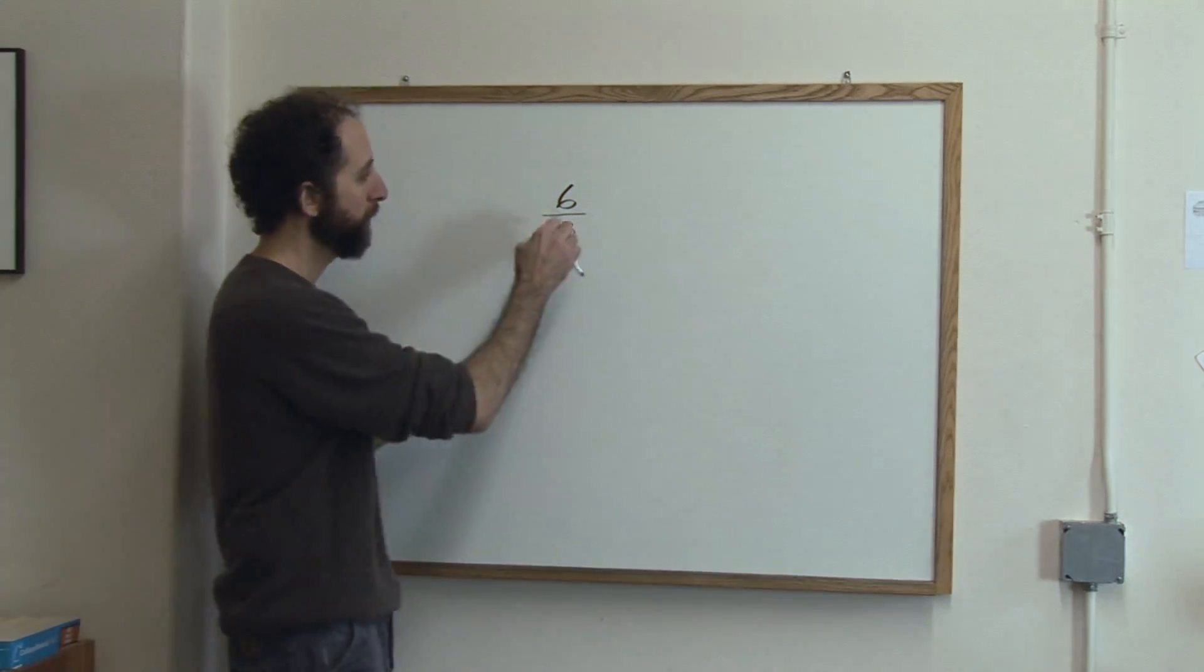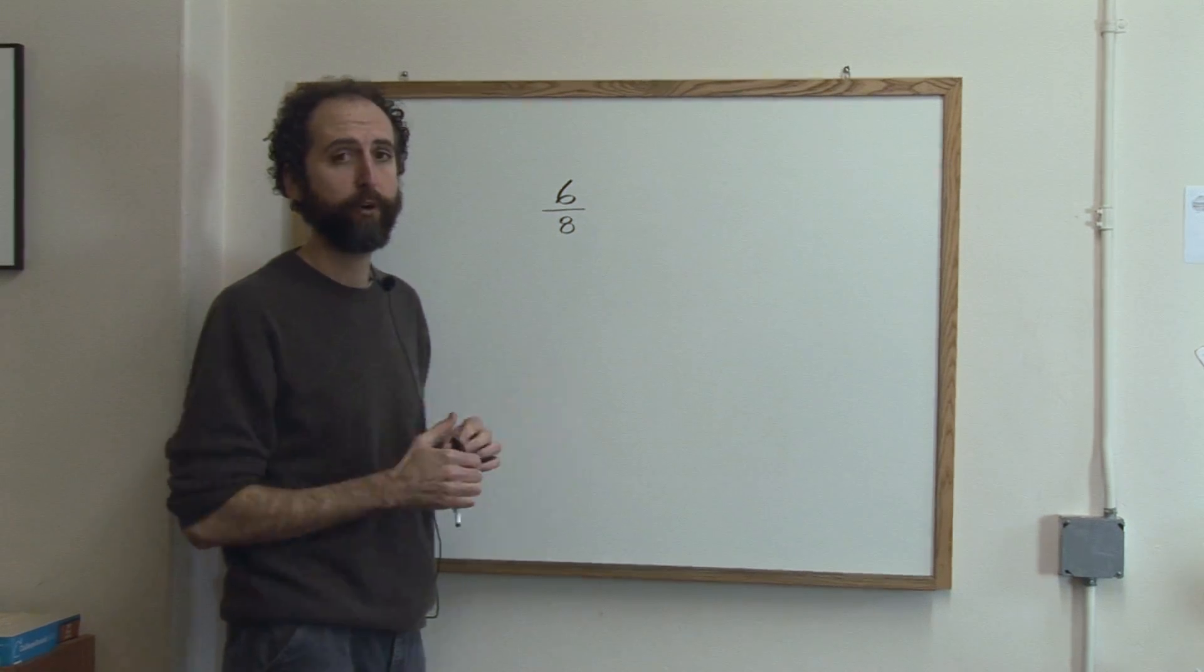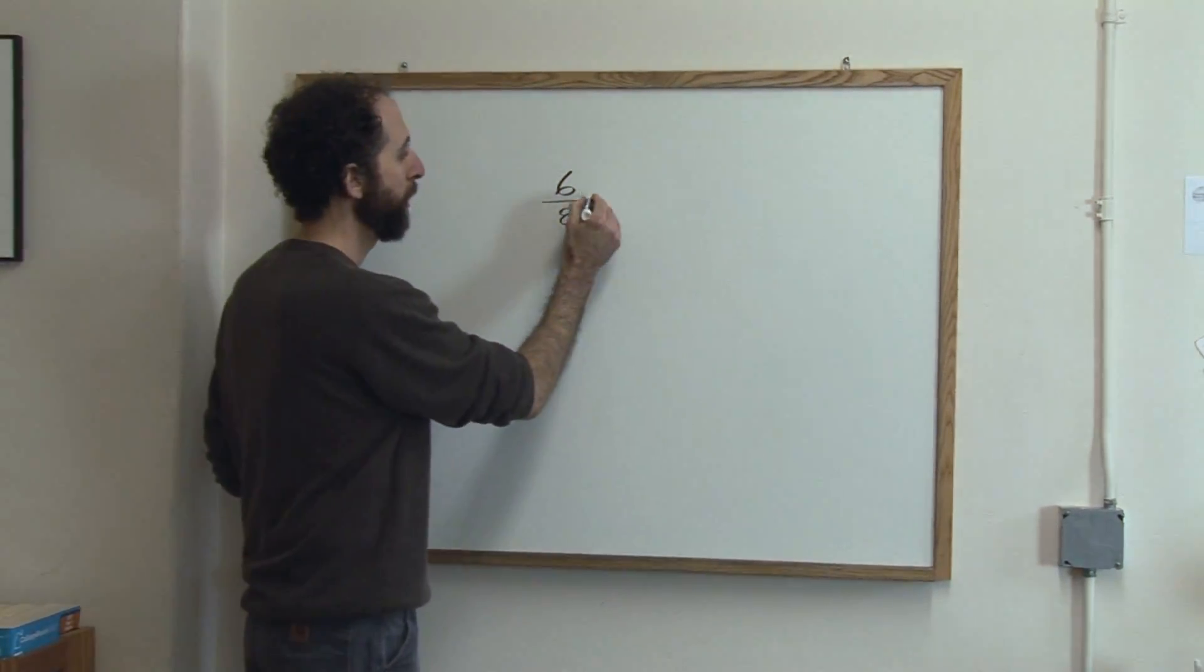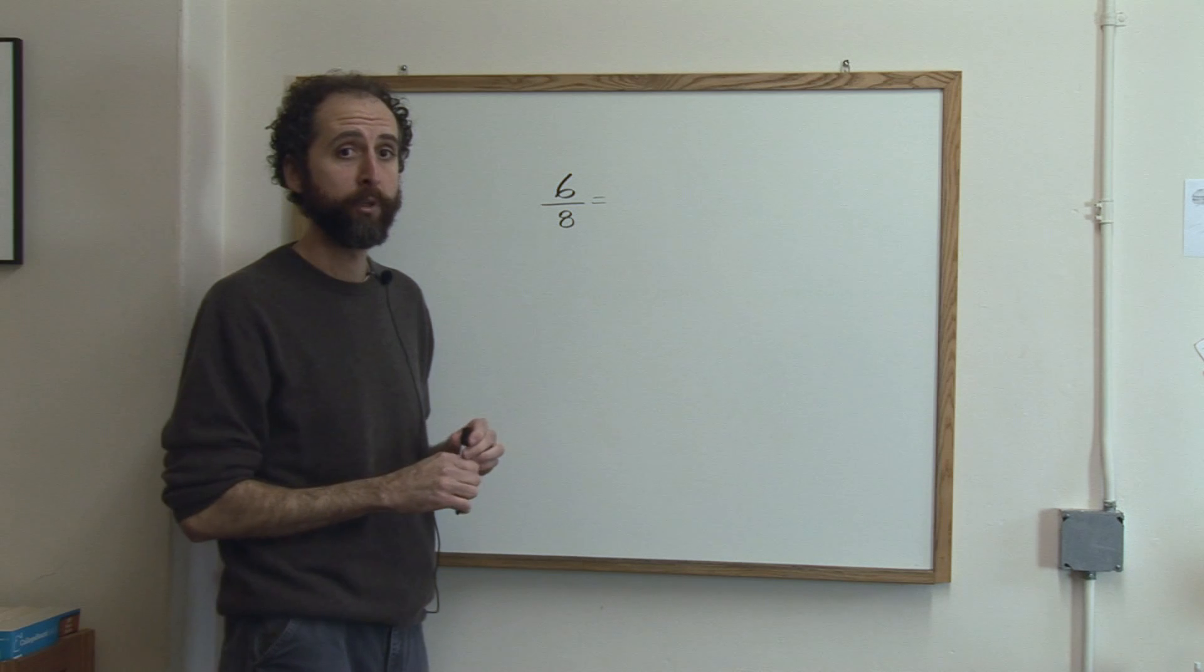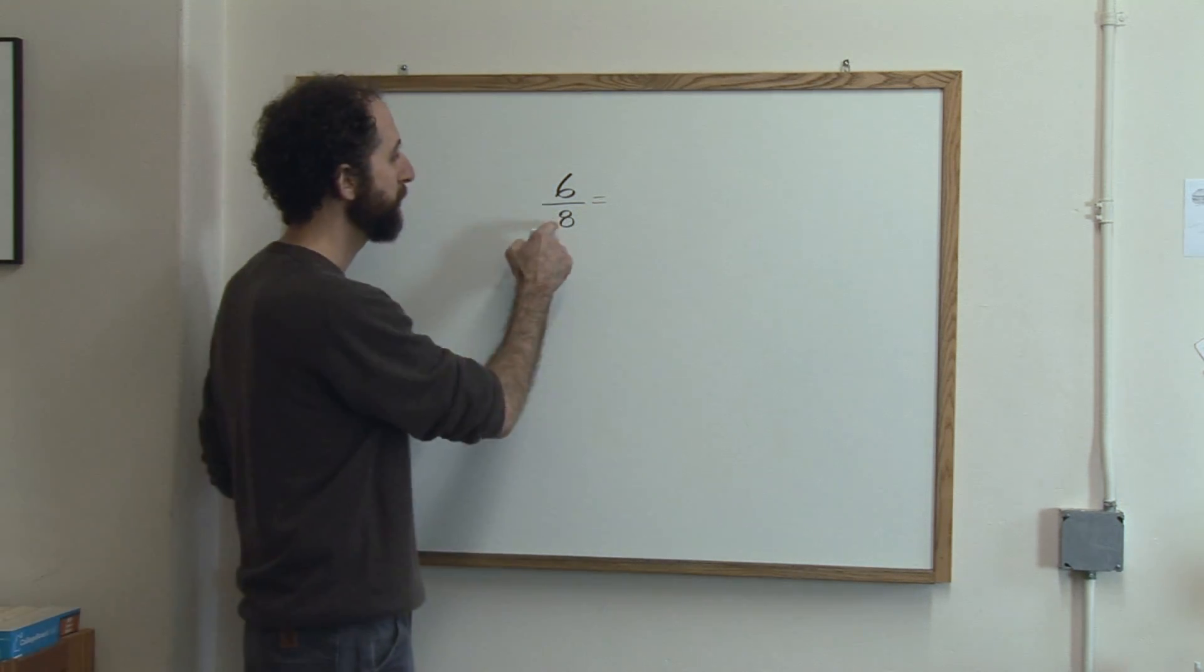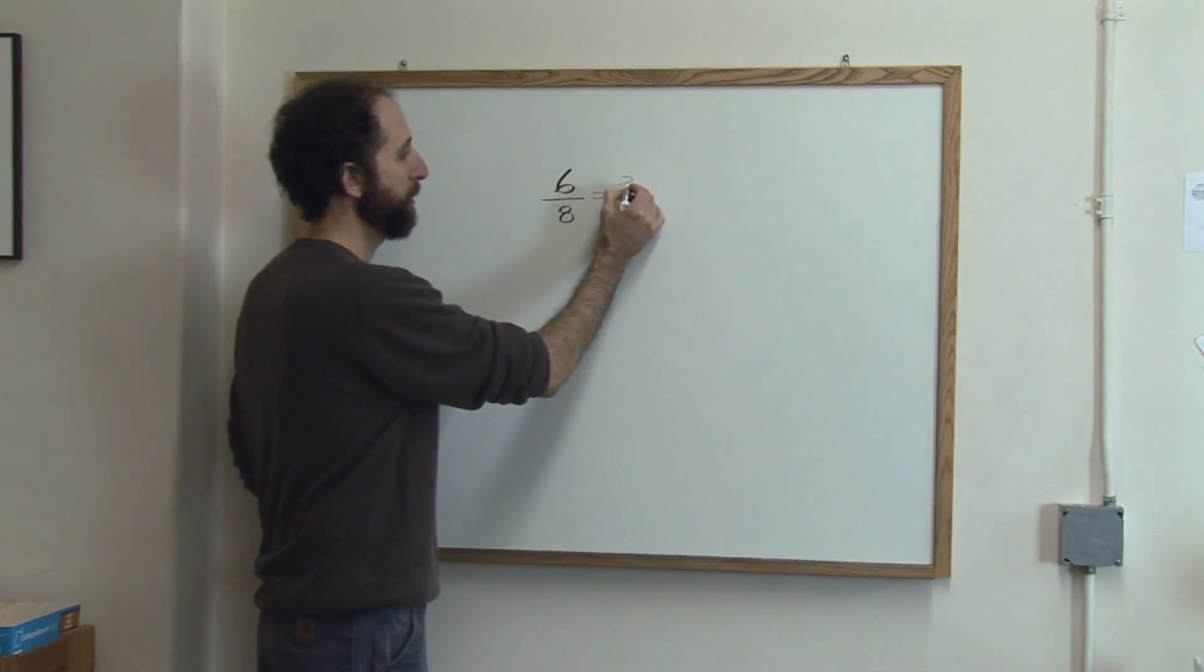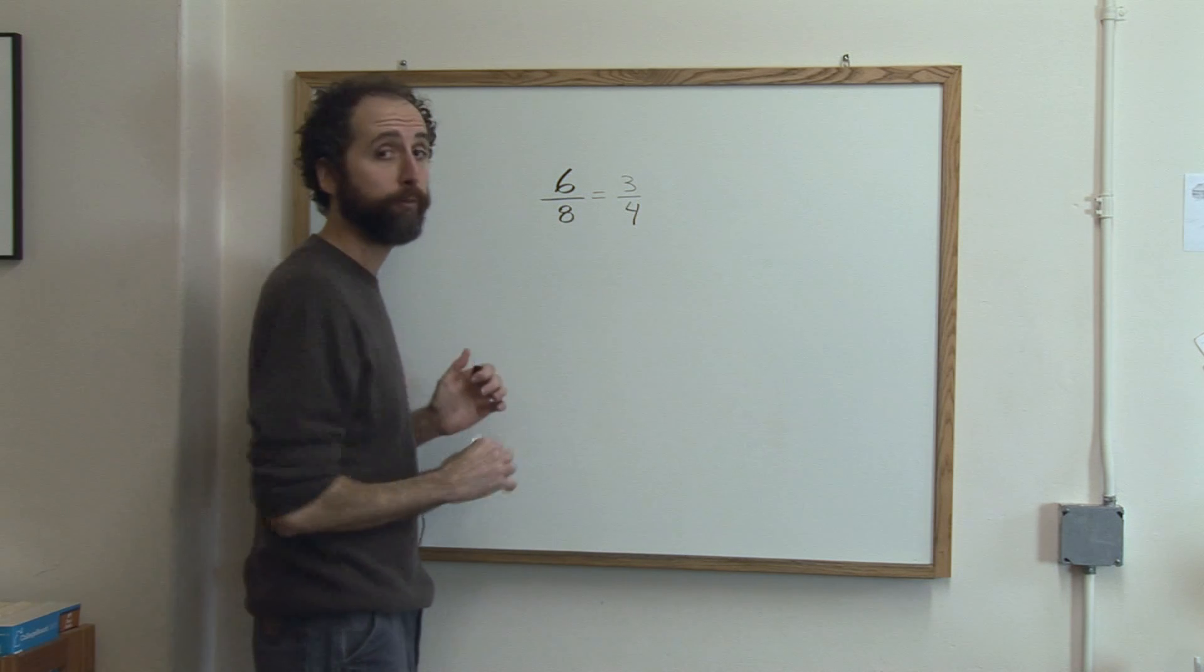The way you do it is take the top number and divide it by the bottom number. That's true for any fraction. If you want to turn a fraction into a decimal or a percent, you just divide the top by the bottom. So we've got 6 divided by 8. You can do that on your calculator. You can also reduce this fraction - 6 out of 8 becomes 3 over 4.